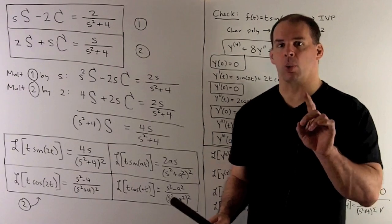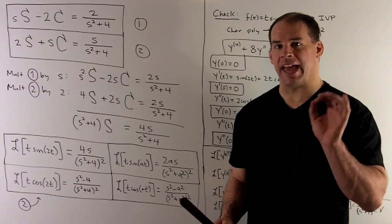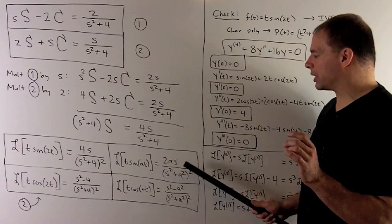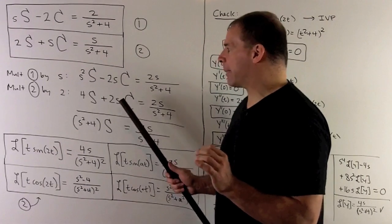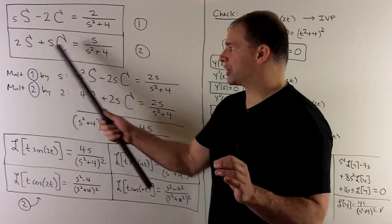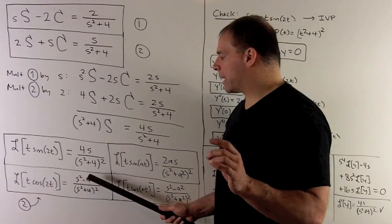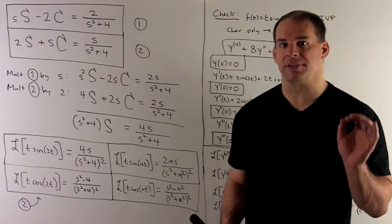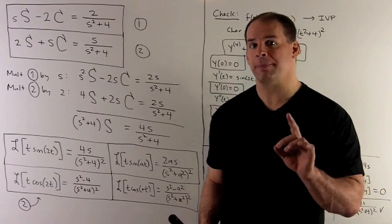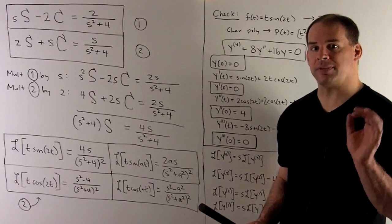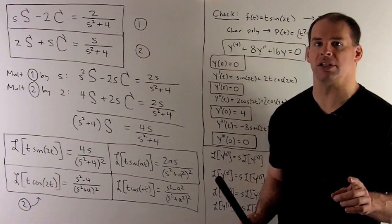If you go through all the work and replace 2 with A, you get the general formula: the Laplace transform of t·sin(At) = 2As/(s² + A²)². Then back-substituting capital S into the second equation, you can solve for capital C to get the Laplace transform of t·cos(2t) = (s² − 4)/(s² + 4)². Replacing 2 with A gives the general formula: Laplace transform of t·cos(At) = (s² − A²)/(s² + A²)².